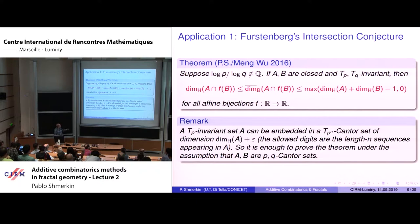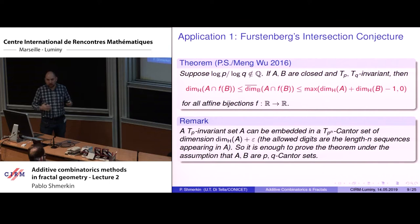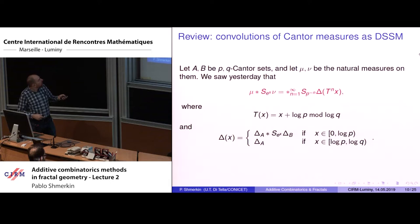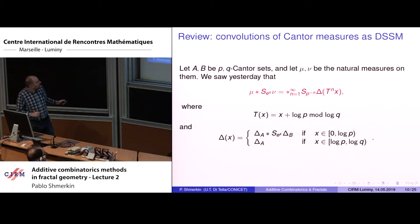Because we need an upper bound, if we take larger sets and prove the upper bound for those, it also implies it for the original sets. If we take the natural measure on a p-Cantor set and the natural measure on a q-Cantor set, and scale one by a factor e^x and convolve, this fits into the framework of dynamical self-similarity. In fact, this example is the motivation for introducing the framework. The group is a circle, and the map T is translation by log p / log q, which is irrational by assumption.